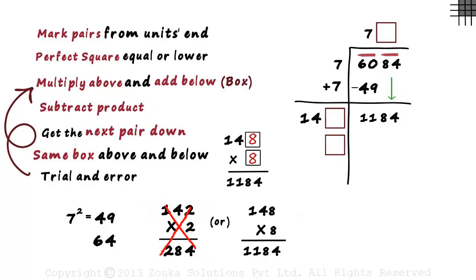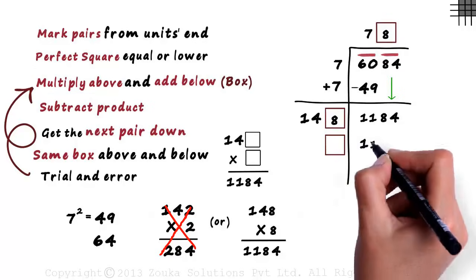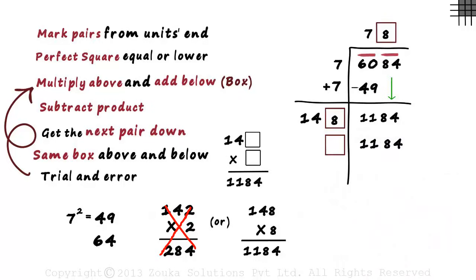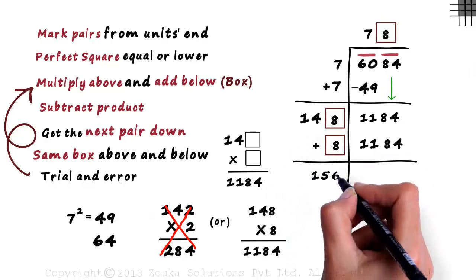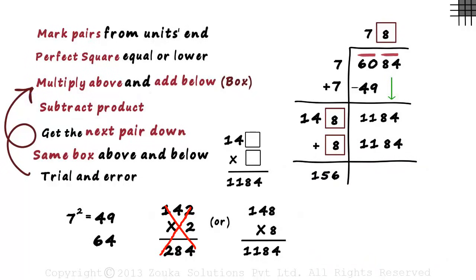After we find the digit in the box, we go back to the third step. We multiply above. 148 multiplied by 8 equals 1184. And then we add below. 148 plus 8 gives us 156. Then we subtract the product we got from the number above it. 1184 minus 1184 equals 0. We stop since there are no more pairs left in the number.